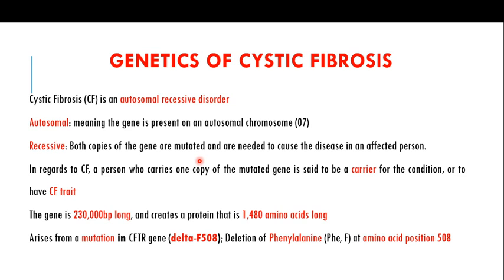In humans, we get one copy of the gene from our mother and one copy from our father. In a recessive genetic disorder, both copies — the one from the mother and the one from the father — must be in the mutated form to cause disease in the affected person. So cystic fibrosis is an autosomal recessive disorder.